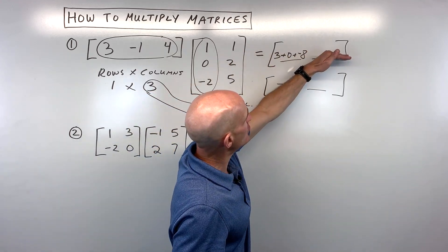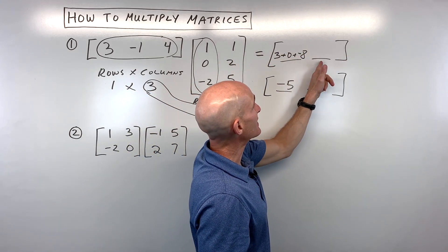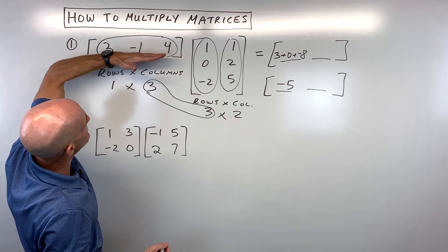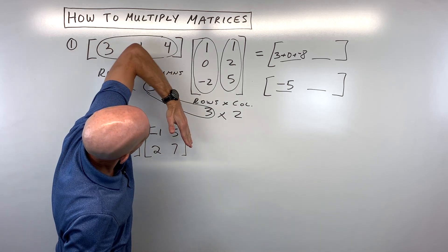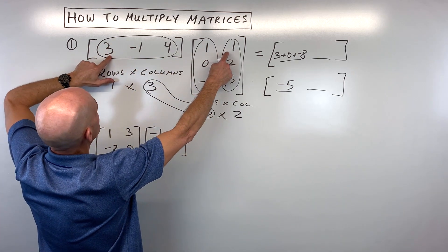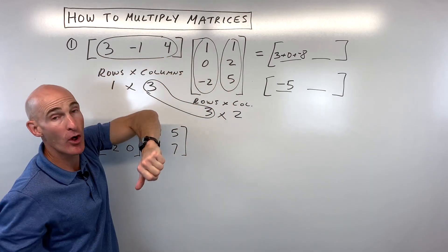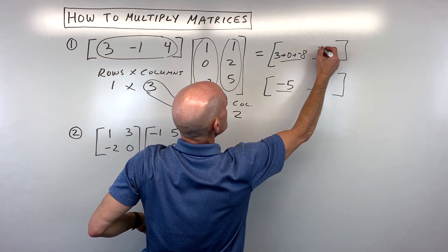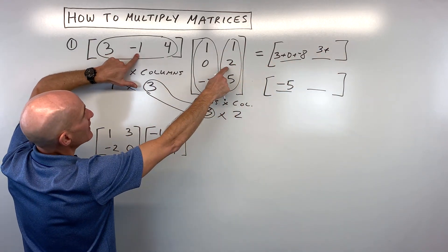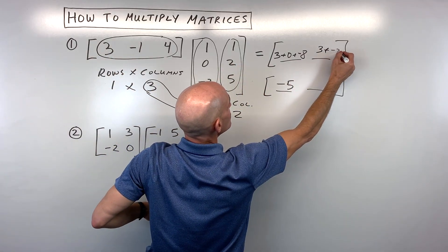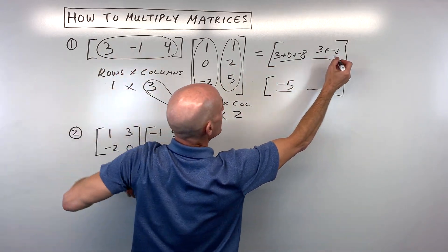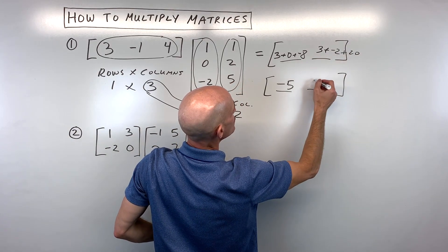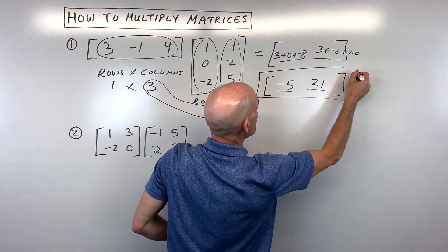This next element is in the first row, second column. So we take the first row times the second column. You can either rotate the row mentally or just match first and first, second and second, third and third, multiply those and add them together. Three times one is three, negative one times two is negative two, and four times five is twenty. Adding those together: three minus two plus twenty is twenty-one. And this is our final result.